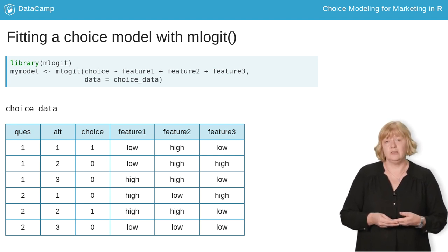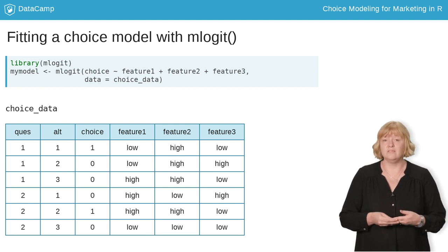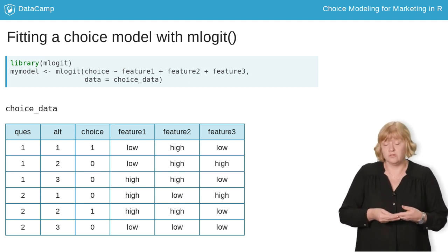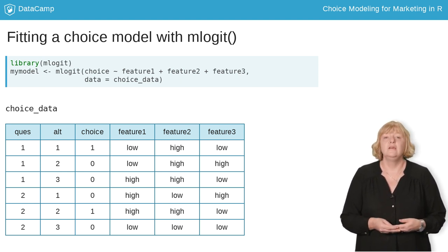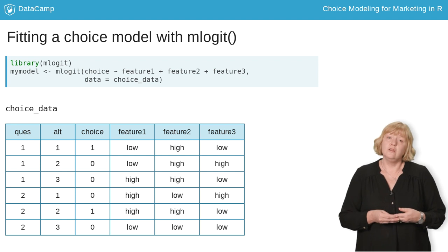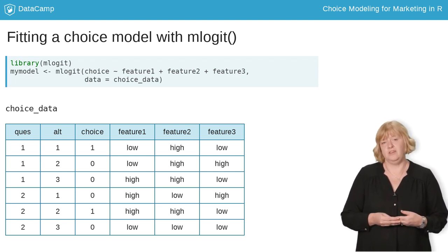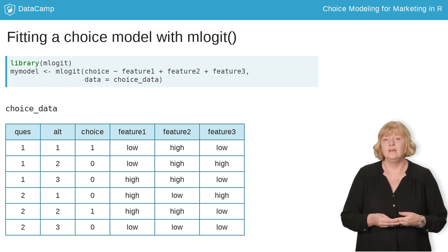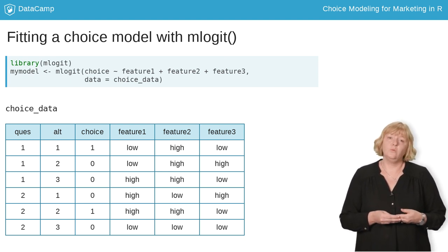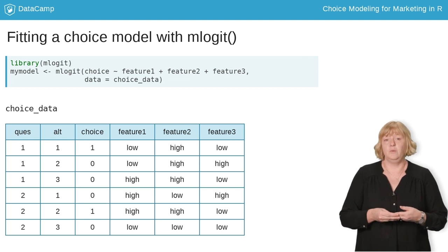The formula that we use should always begin with the name of the column that indicates the choice, because we want to predict the choice. Then we type a tilde, and after the tilde, we list the names of the product features we want to use to predict the choice. Just like lm, we also indicate which data frame we want to use to fit the model.